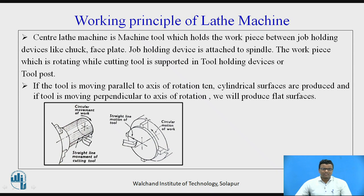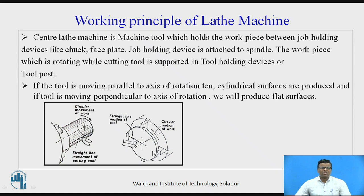There are two cases whenever we want to remove the material. In the first diagram, the tool is moving parallel to the axis of rotation — the job is rotating and the tool moves parallel — so we get a cylindrical type of surface. In the second diagram, the workpiece is rotating and the tool is moving perpendicular to the axis of rotation of the workpiece. In this case, we get a flat type of surface.